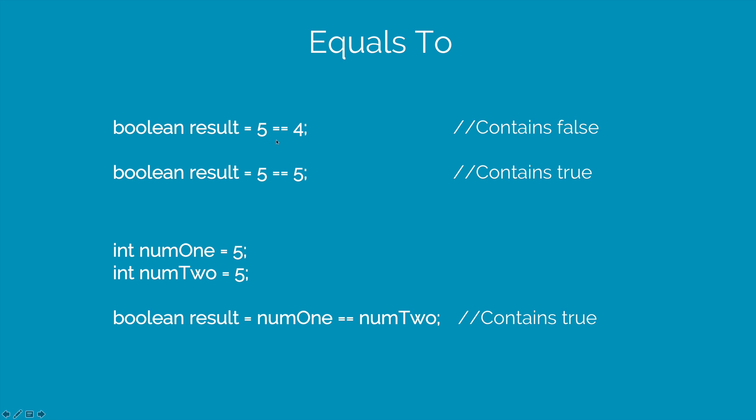5 equals equals 4 is asking a question. It is asking is the number 5 equals to 4. There is only one answer, either true or false. That result is stored inside the boolean variable called result. 5 equals equals 5 is going to be true.